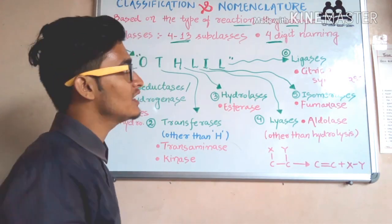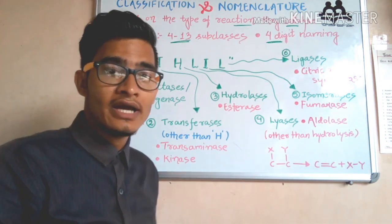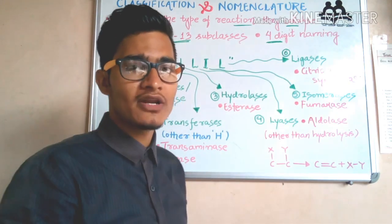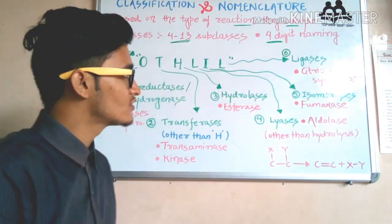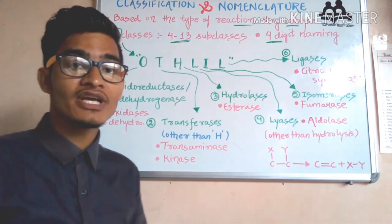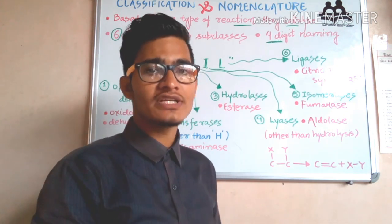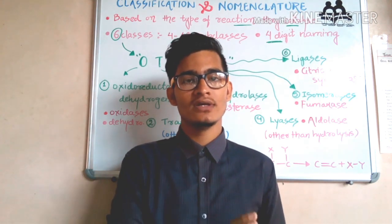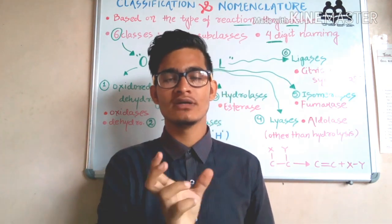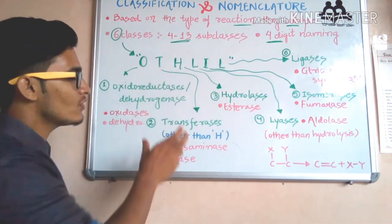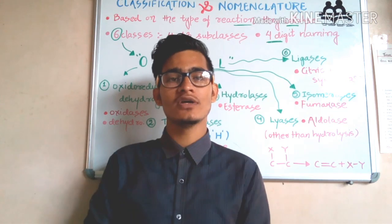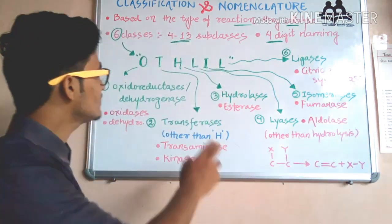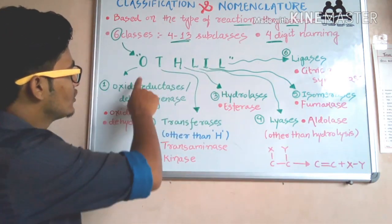The recent naming system of enzymes is four-digit naming. In this nomenclature, an enzyme is named with four digits. We will talk about nomenclature at the end of this video. Firstly, we are going to talk about the classification of enzymes. The six classes in a particular sequence can be memorized by a simple trick — the word 'OATHLIL,' which contains the initial letters of all six classes: O-T-H-L-I-L.